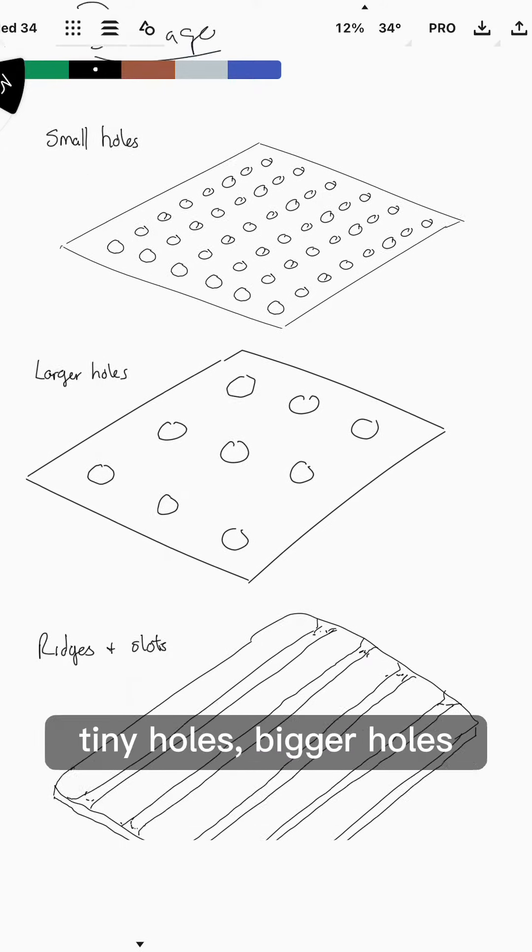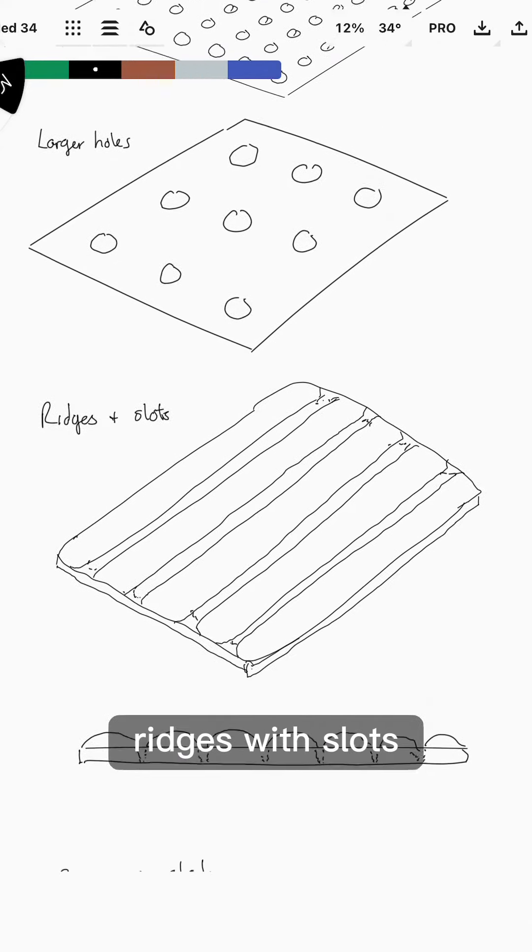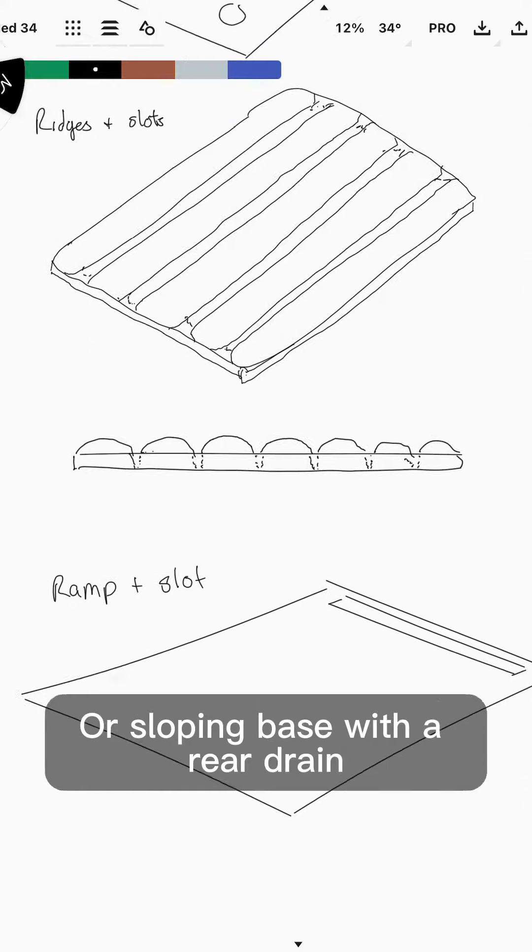I pondered various options: tiny holes, bigger holes, ridges with slots, or sloping base with a rear drain.